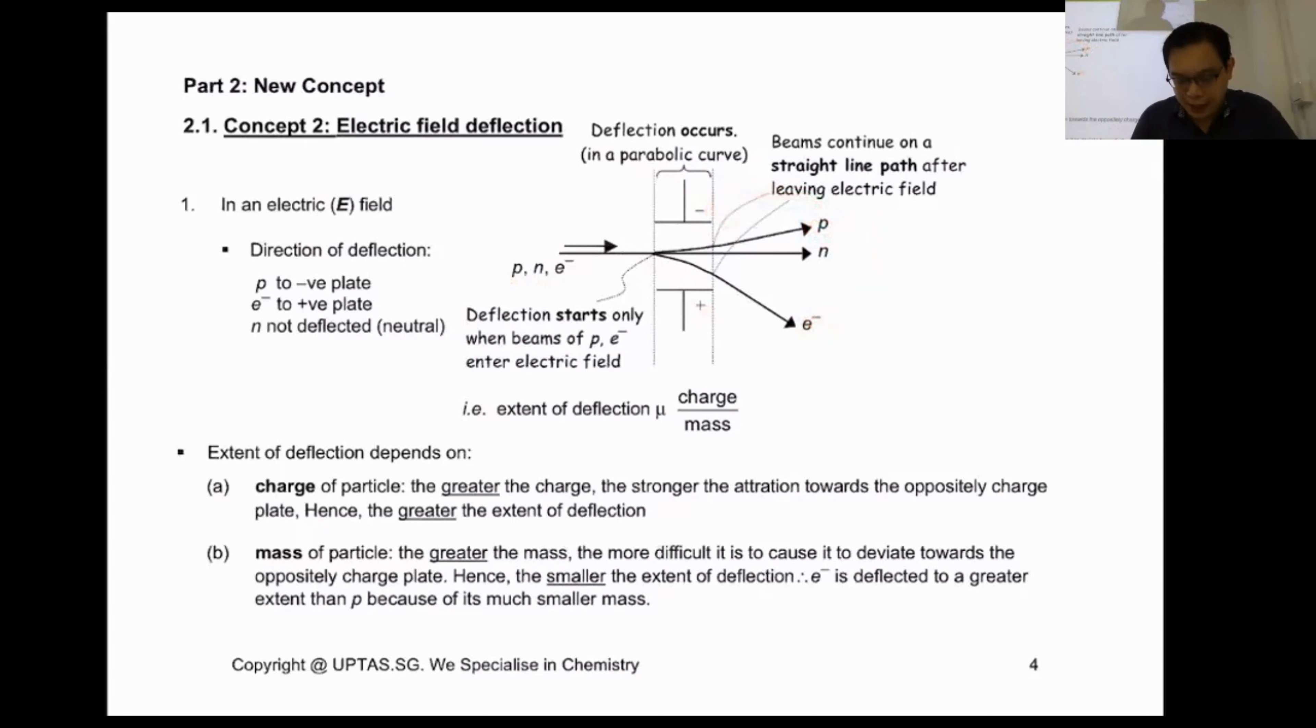But you notice that the electron is a magnitude of one, proton is a magnitude of one. How come the electron is attracted so much? Because electron is way lighter. So in other words, the lower the mass, the bigger the angle of attraction. So we draw a conclusion. We say extent of deflection, which is called angle of deflection, is proportionate to your charge. Bigger the charge, smaller the mass, the bigger the angle of deflection. I think this is where we last left off.